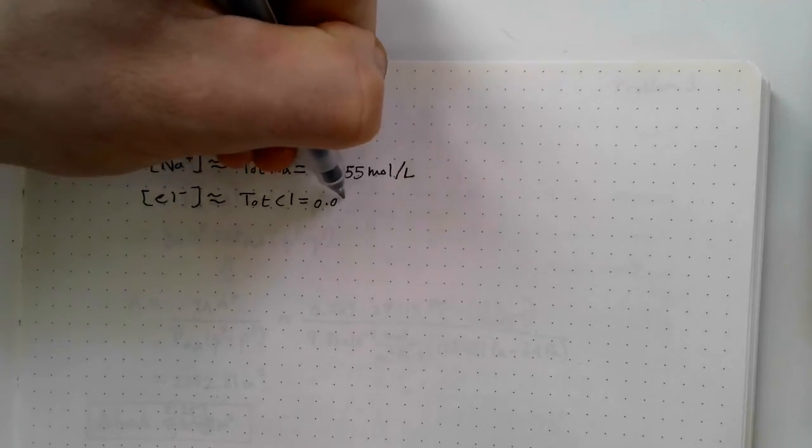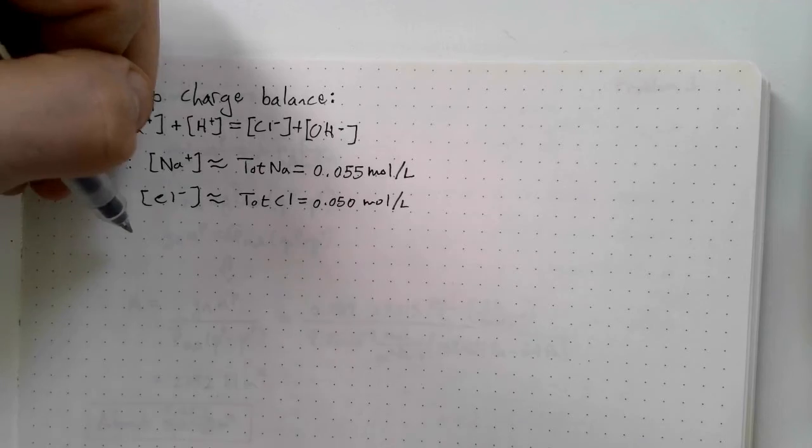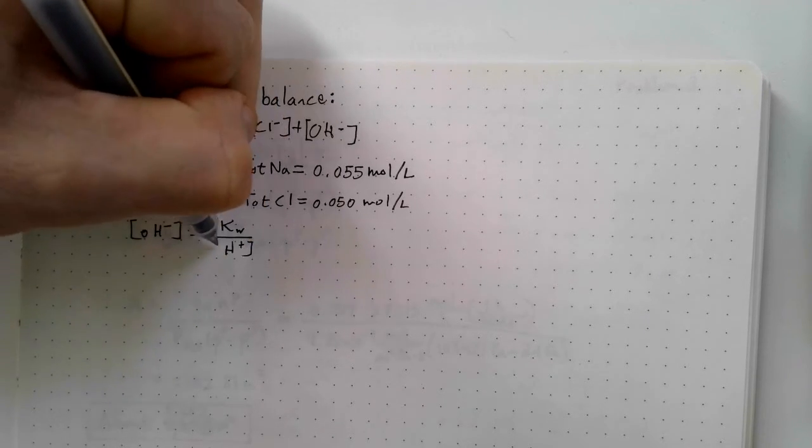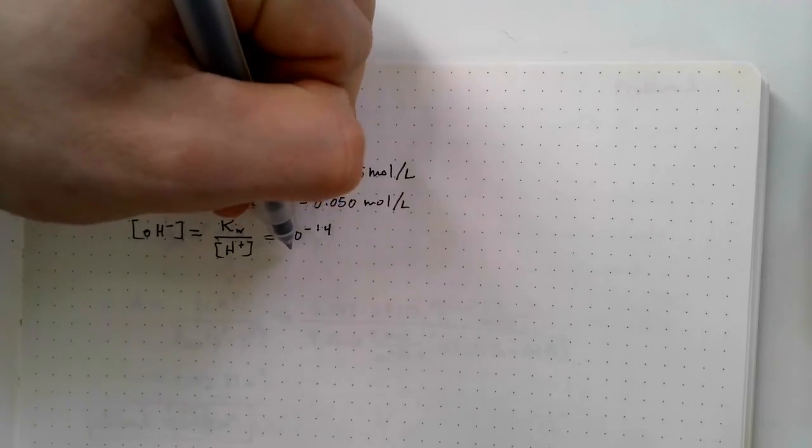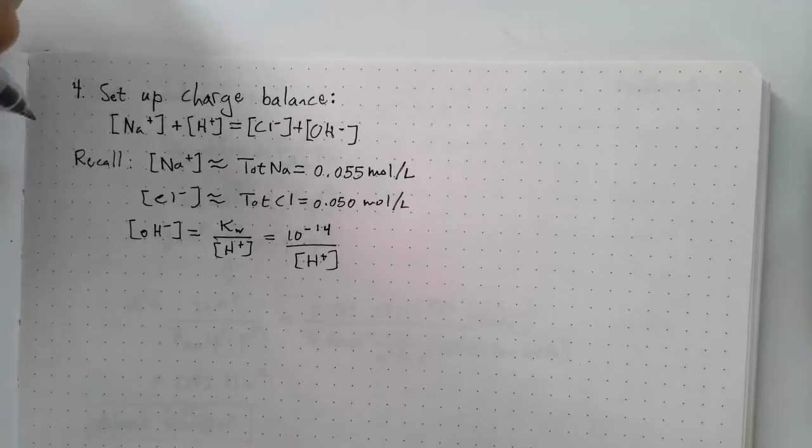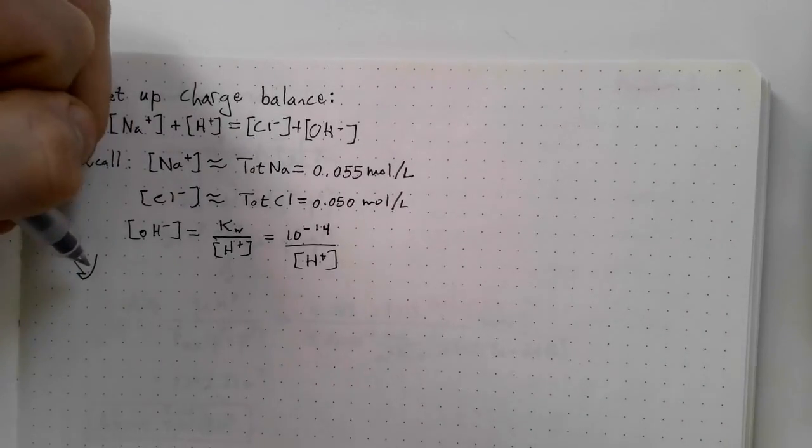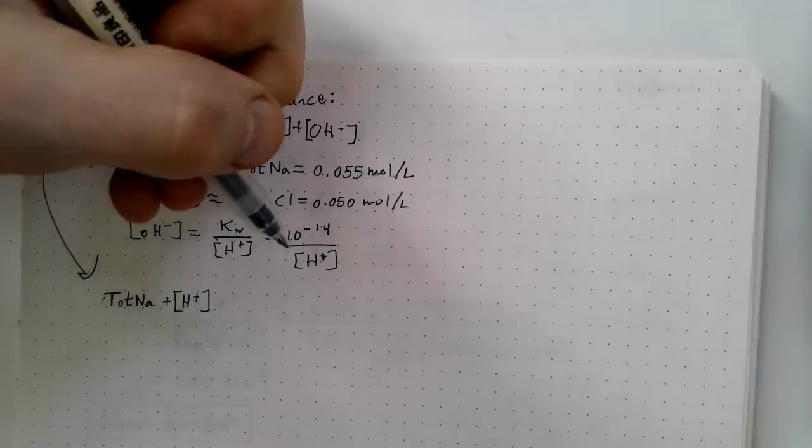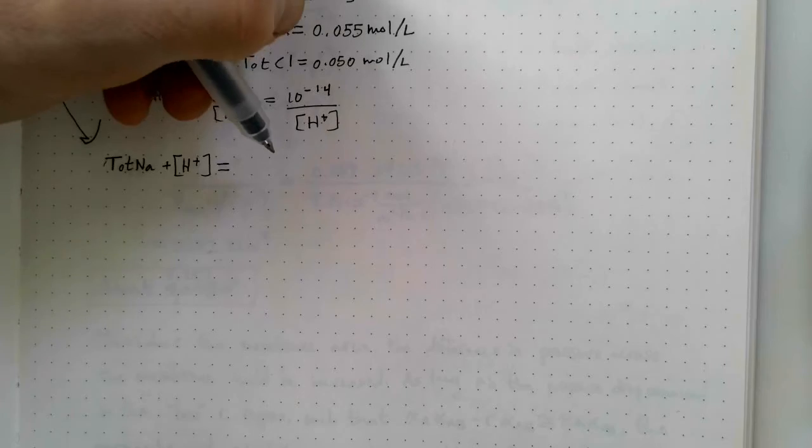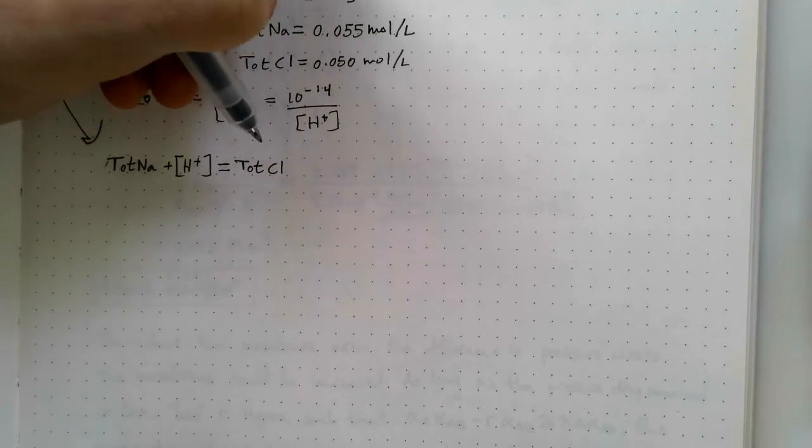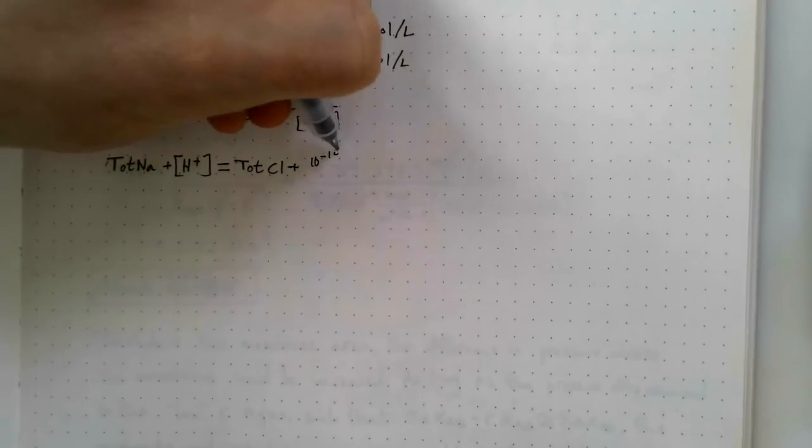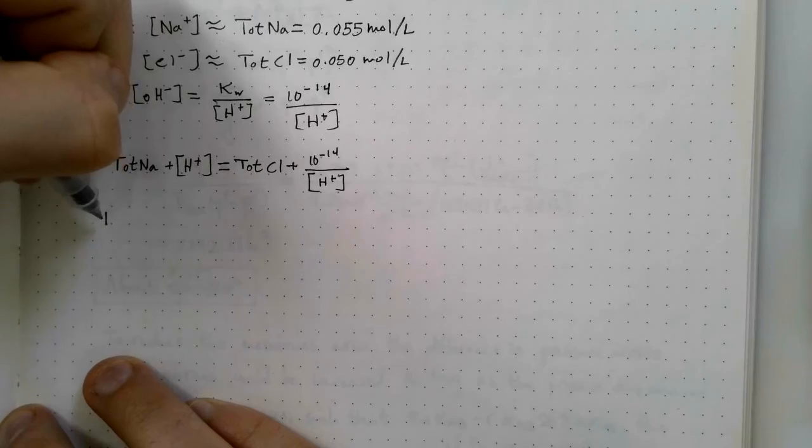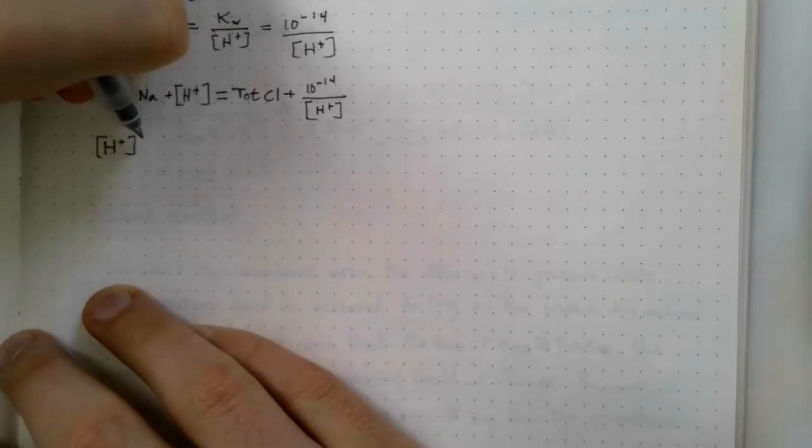And chloride, likewise, is approximately equal to tot Cl, which is 50 millimoles per liter. And then we can just recall as well that the hydroxide concentration is equal to Kw over H plus, which is 10 to the negative 14th over H plus. Just so you're aware, Kw varies with temperature and it varies with ionic strength. So if you have a concentrated solution, you might want to look in the literature for equations or data that you can use to calculate a detailed Kw. What I'm doing now is substituting these into the mass balance equation. And you can see that effectively, I have tot Na and tot Cl, which are constants. I know them already. And the only thing left is an equation in H plus.